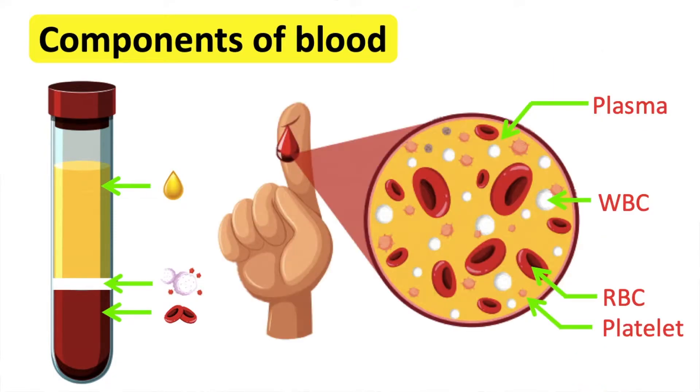The components of blood are red blood cells, white blood cells, platelets, and blood plasma.